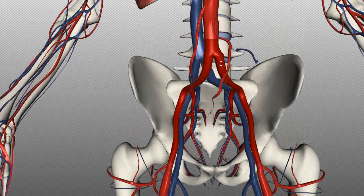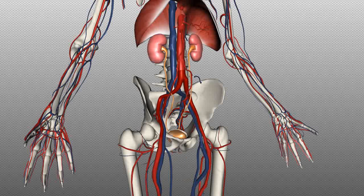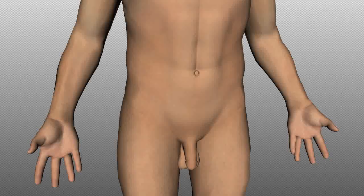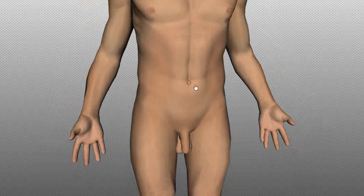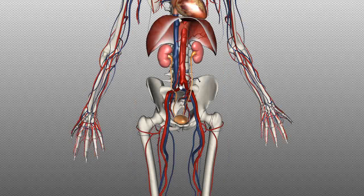To give some perspective on whereabouts we are in relation to other structures, I'll put in the bladder so you can see where it sits in relation to the bifurcation. You can also see the kidneys. In relation to surface anatomy, you can see the umbilicus, which sits at around the level of L3 to L5 vertebra — very close to where the aorta bifurcates.